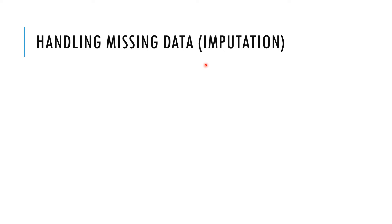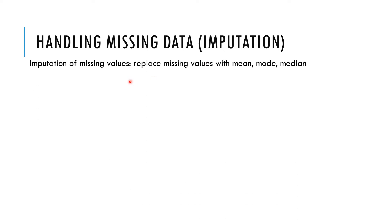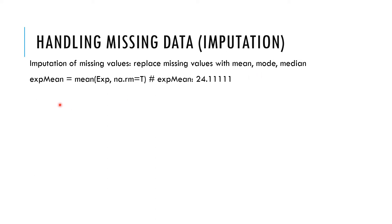Other than deleting rows with missing values, we can use imputation — replacing missing values with a number. The simplest way is to replace missing values in numerical variables with the mean or median, and in categorical variables with the mode. We calculate the mean of the experience variable using the mean() function with na.rm=TRUE, which ignores missing values during calculation.